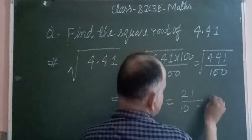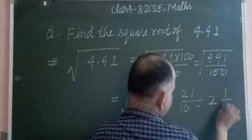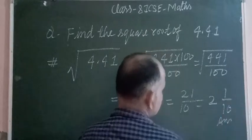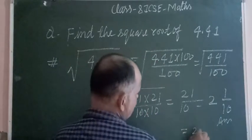Now we divide 21 by 10, which equals 2.1. So this is the answer, or we write it as 2.1.